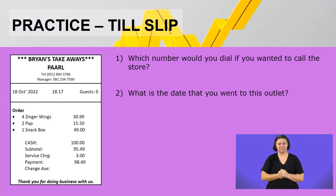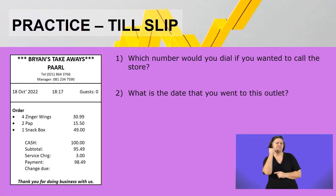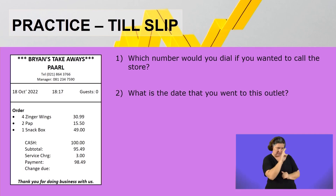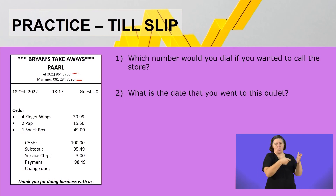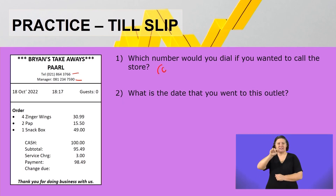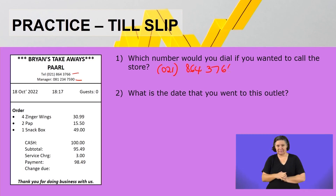Let us quickly look at the first scenario. The first thing up is till slips. Question number one says: which number would you dial if you wanted to call the store? Please make sure you get familiar first with what you have in front of you. Looking at the till slip, there's a telephone number and a cell phone number just below that. Since you want to call the store, you're going to call the landline, so the number here will be 021-864-3766.